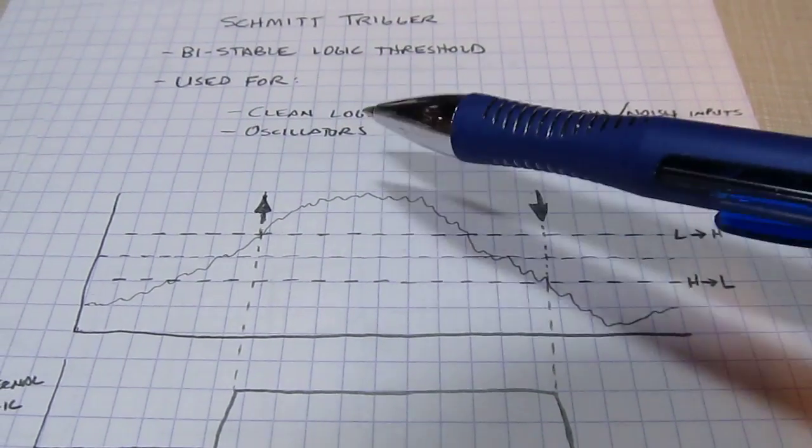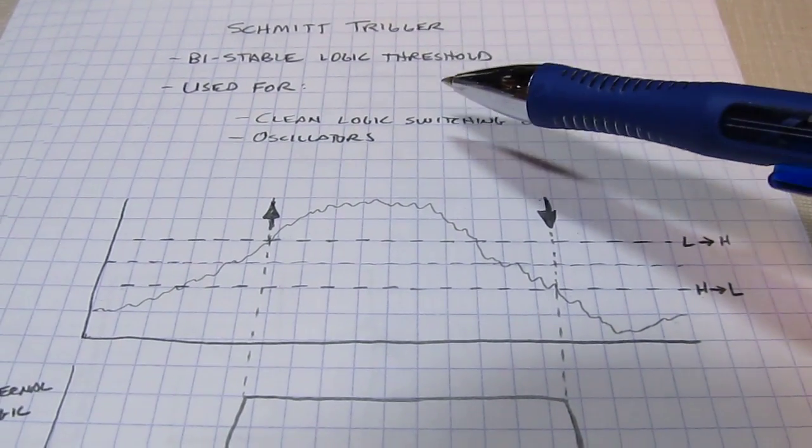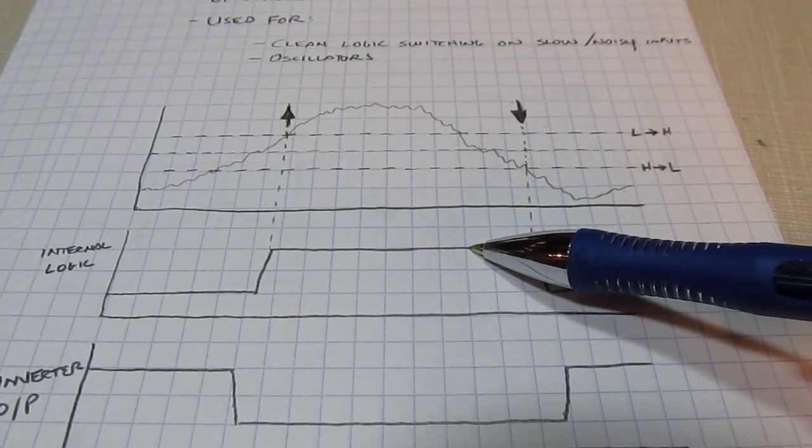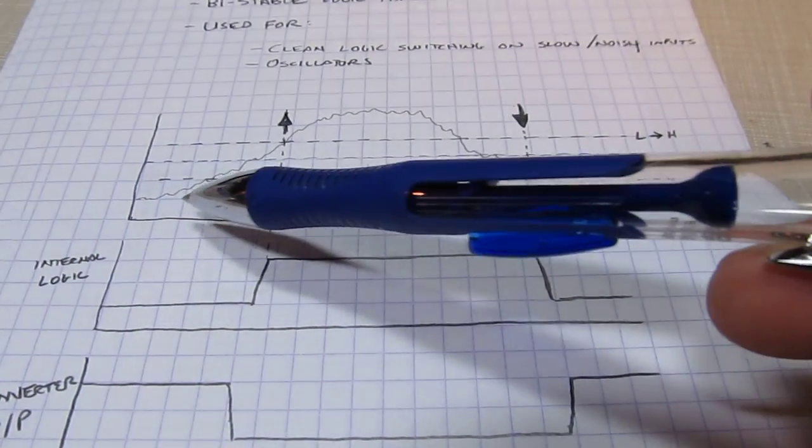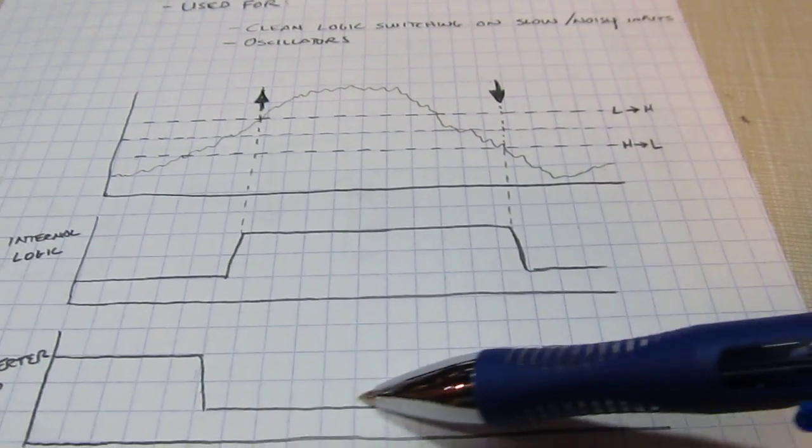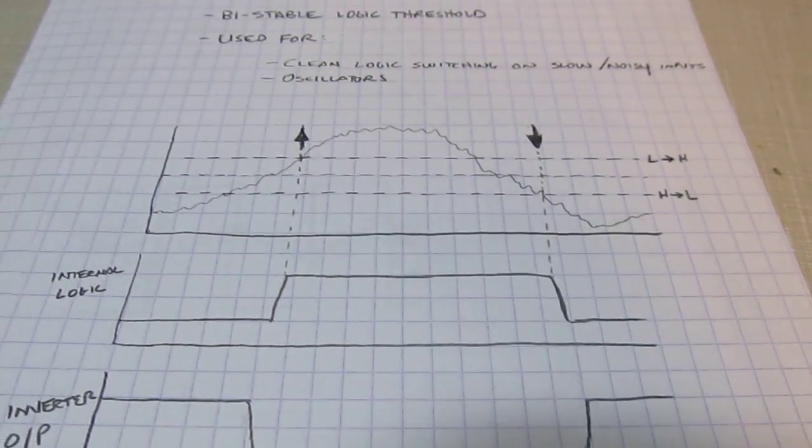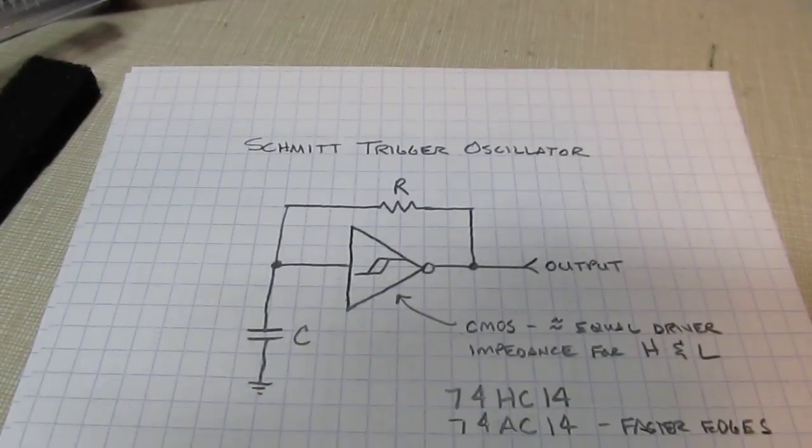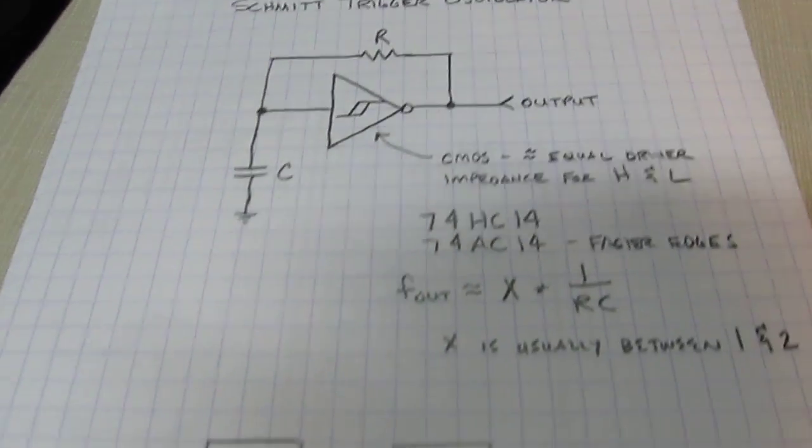If we have a Schmidt trigger type input on an inverter, the output of the inverter would just be opposite of this voltage. So that when our input was low, the output would be high until we cross this upper threshold, and the output goes low, and vice versa. So that's how it will happen essentially in the oscillator. So let's see how the oscillator works.